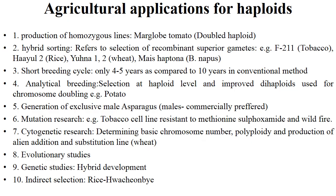Coming to agricultural applications of haploids. The first and foremost is production of homozygous lines. Second is hybrid sorting, which refers to selection of recombinant superior gametes — for example F211 in tobacco, Hayul 2 in rice, Johanna 1 and 2 in wheat, Maris Haplona in case of Brassica napus.